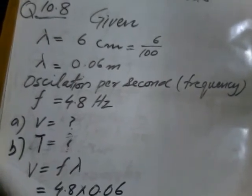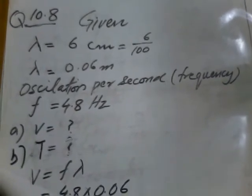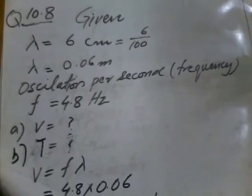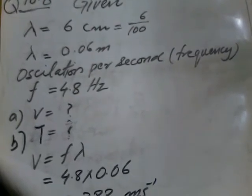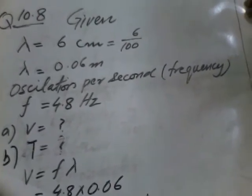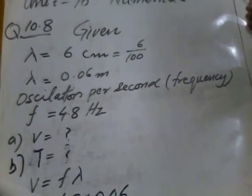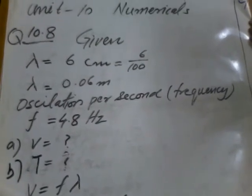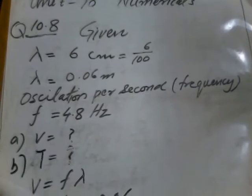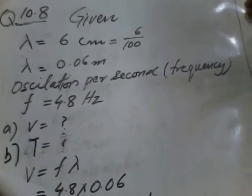Our given data: Wavelength λ is equal to 6 cm. We convert it into meters. Lambda is equal to 6 divided by 100.